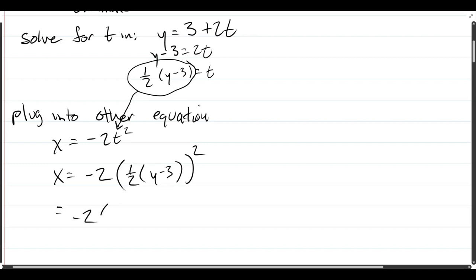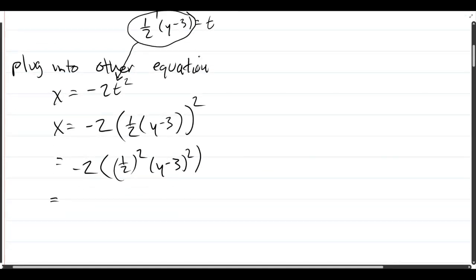Now we're going to square it, so we square the one-half, then multiply it together, and then square the y minus 3. And from here, this one-half squared is one-quarter, so we have negative 2 times one-fourth. If I square the y minus 3,